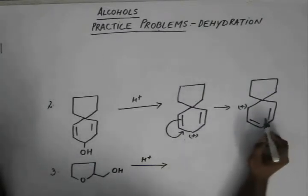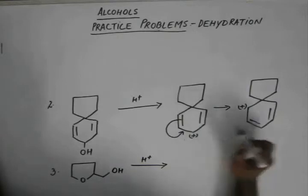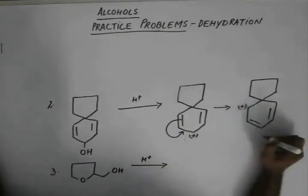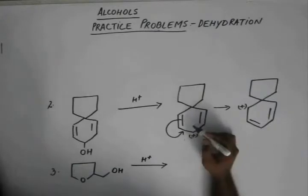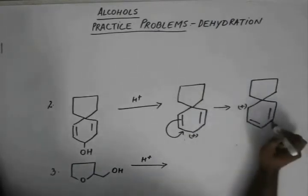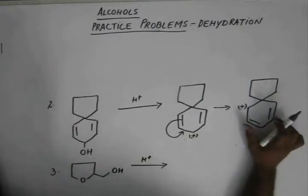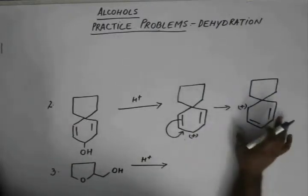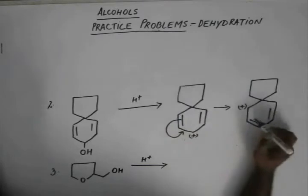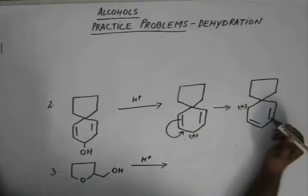This rearranges because in this case the resonance is better than this. This has a better resonance than this and thus higher resonance energy than this, so this will become the more stable carbocation.